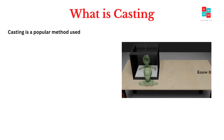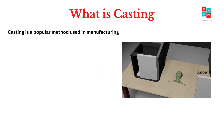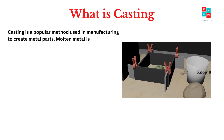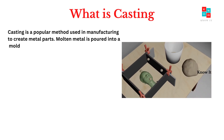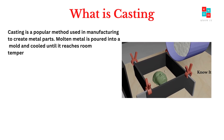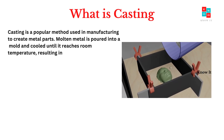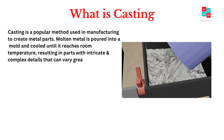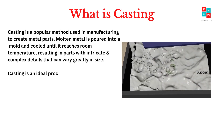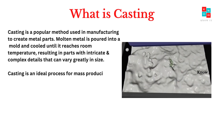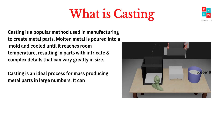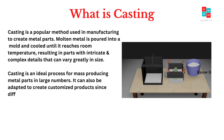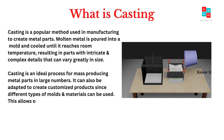Casting is a popular method used in manufacturing to create metal parts. Molten metal is poured into a mold and cooled until it reaches room temperature, resulting in parts with intricate and complex details that can vary greatly in size. Casting is an ideal process for mass-producing metal parts in large numbers. It can also be adapted to create customized products since different types of molds and materials can be used.